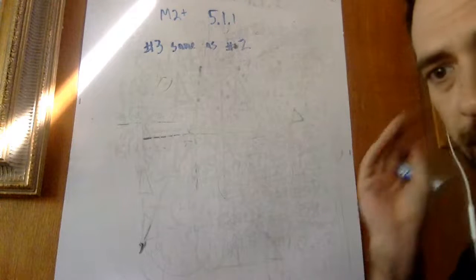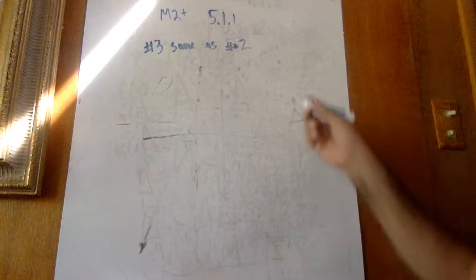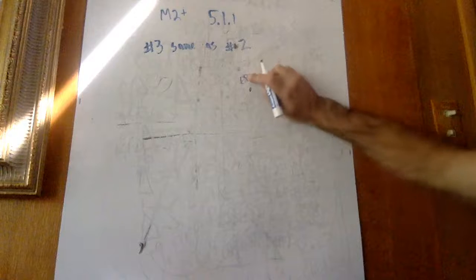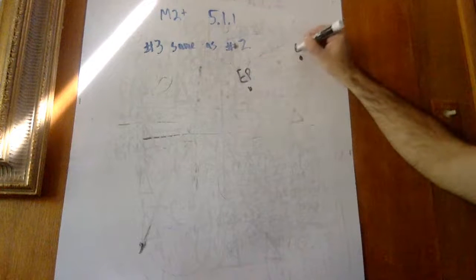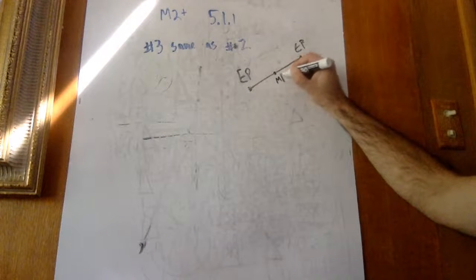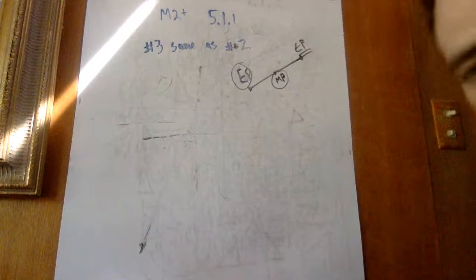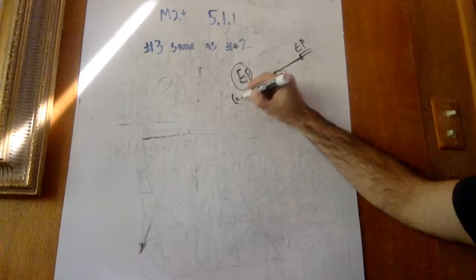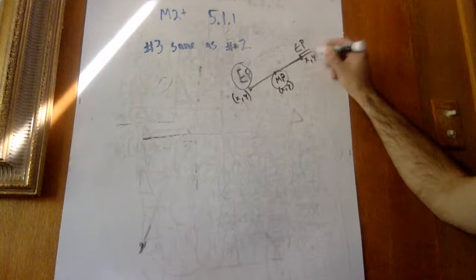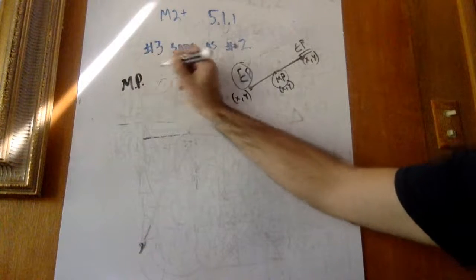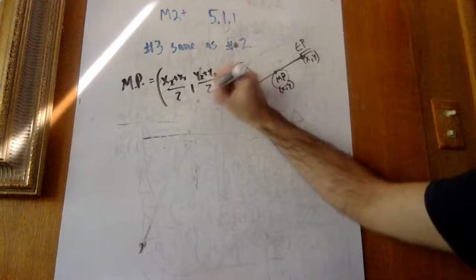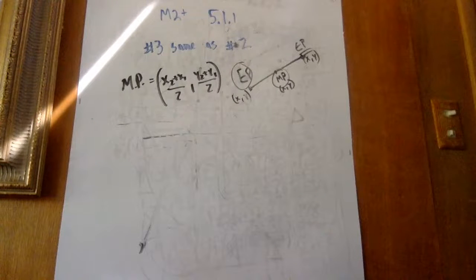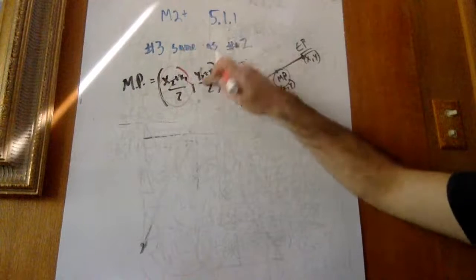For problems 4 and 5, we find the coordinates of the second endpoint, given one endpoint and the midpoint. Before, we had two endpoints and were trying to find the midpoint. This time, they're giving us one endpoint and the midpoint, and we've got to find the other endpoint. Remember, both endpoints and the midpoint are (x, y) ordered pairs.